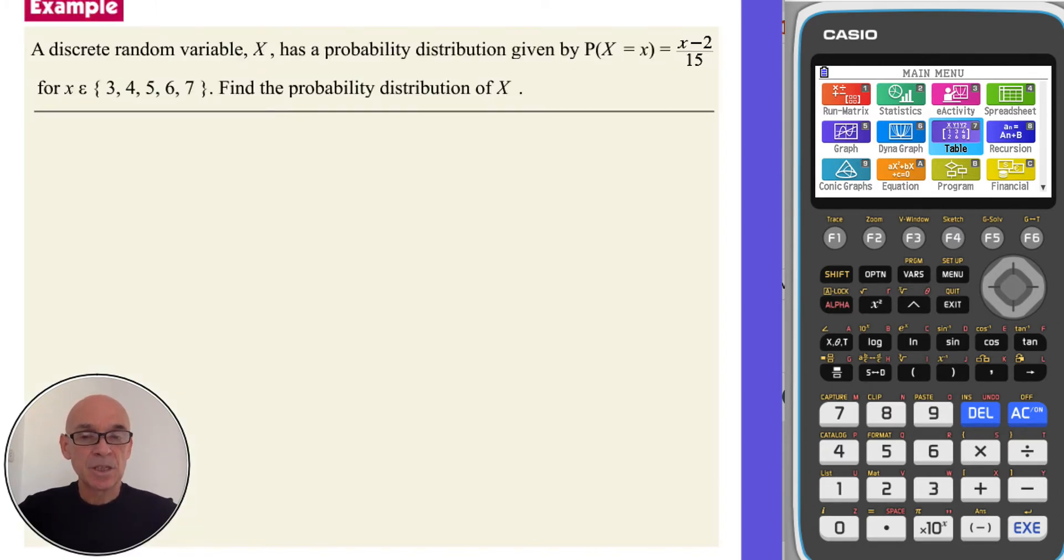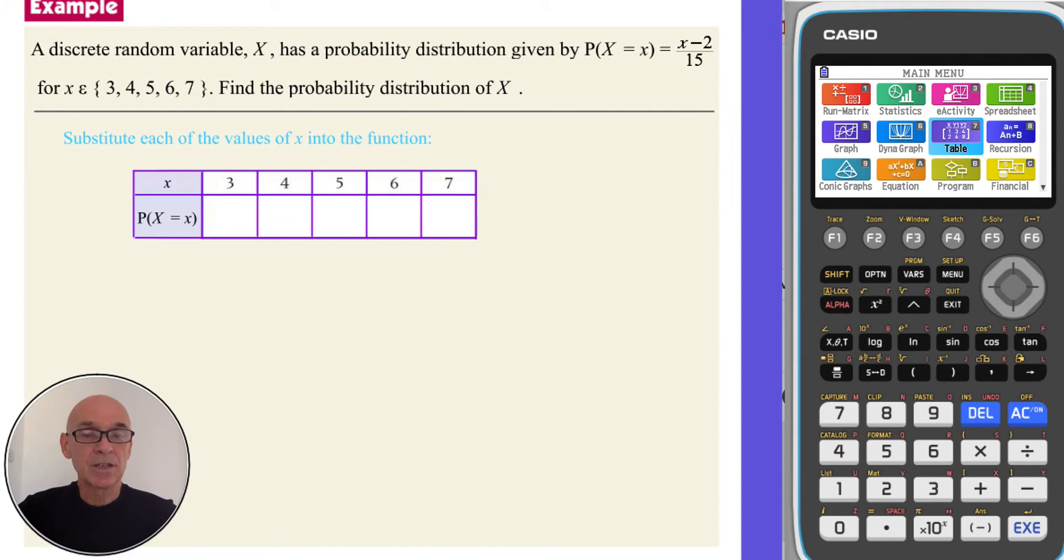In this question, the probability distribution is defined by the function given, and we're asked to find the probability distribution, in other words, the table. So to do this, all we need to do is substitute the values of X into the given function. So substituting 3 in would be 3 take away 2 is 1, so that would be equal to 1/15. And the next one, using X equals 4, so 4 take away 2 is 2, so that would be 2/15. And so on. So this is the probability distribution.